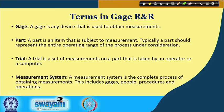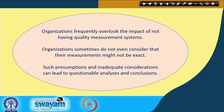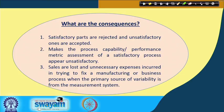The measurement system is a complete process of obtaining a measurement, and it includes the gauge, instrument, people, procedure, operations, environment, and everything. Organizations frequently overlook the importance of measurement and sometimes do not even consider that they may be measuring incorrectly. Such presumptions and inadequate consideration can lead to questionable analysis and conclusions. Over a period of time, you will lose faith in your results and recommendations, and may stop taking corrective actions.